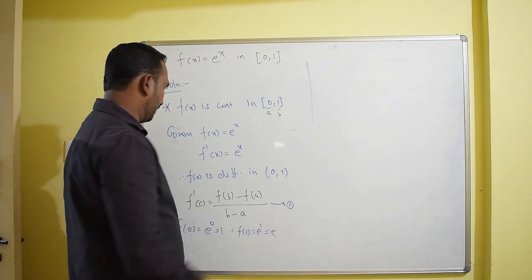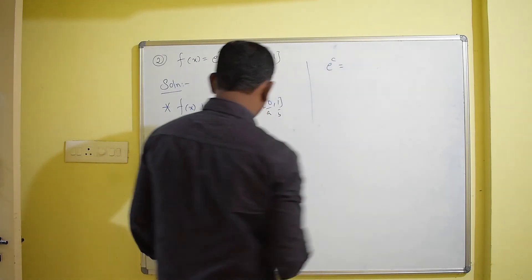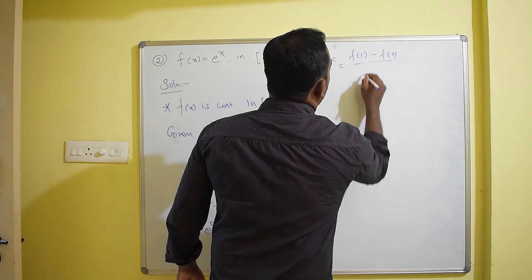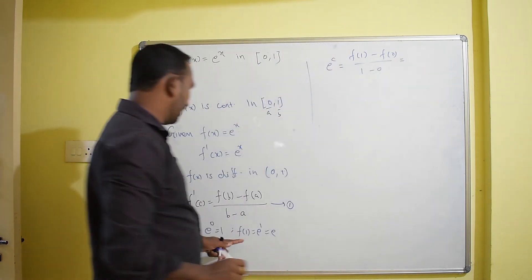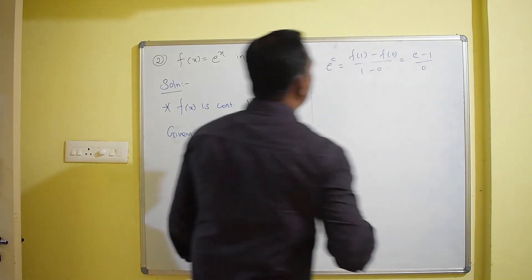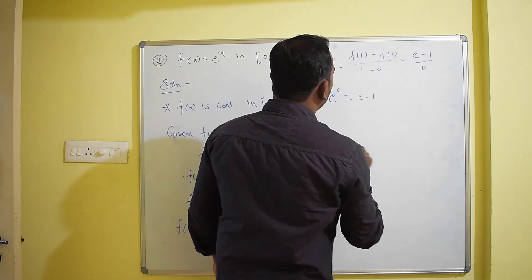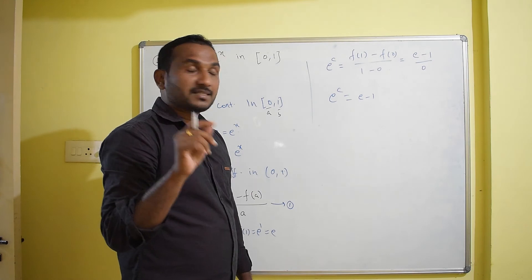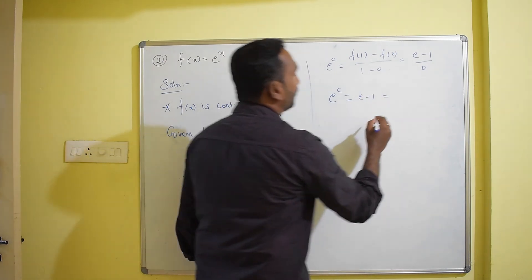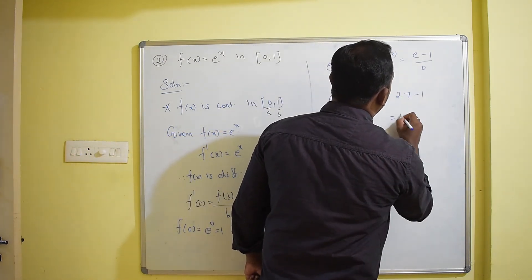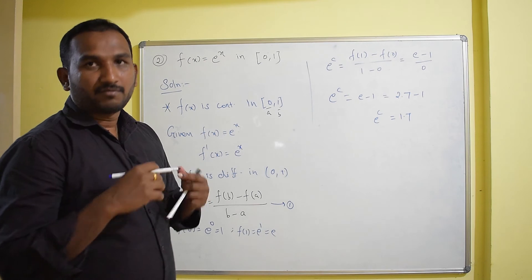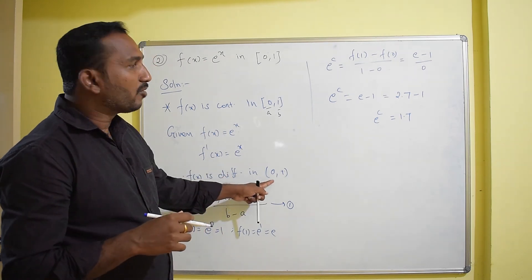Substituting into the formula: eᶜ = [f(1) − f(0)] / (1 − 0) = (e − 1) / 1 = e − 1. Using e ≈ 2.7, we get eᶜ = 1.7. To find c, we take the natural log of both sides: c = ln(1.7).